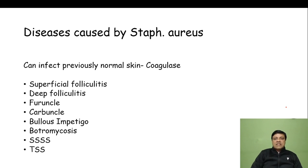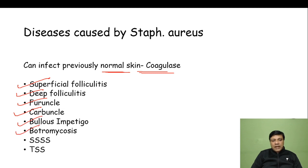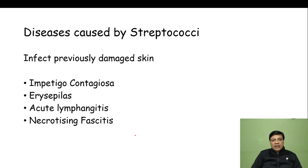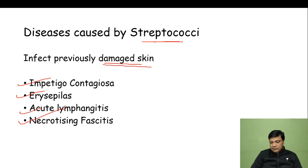Diseases caused by Staphylococcus aureus — it can infect previously normal skin due to production of coagulase. These include: superficial folliculitis, deep folliculitis, furuncle, carbuncle, bullous impetigo, botryomycosis, and the last two are toxin-mediated: staphylococcal scalded skin syndrome and toxic shock syndrome. Diseases caused by streptococci — which requires previously damaged skin — include impetigo contagiosa, erysipelas, acute lymphangitis, and necrotizing fasciitis.